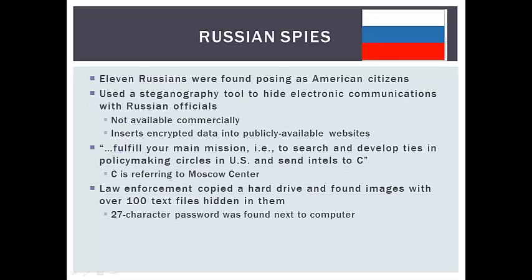Another example is a group of 11 Russian spies who were arrested and found to be impersonating Americans. They used a steganography tool to hide their electronic communications with Russian officials. The tool they used is not commercially available. It works by inserting encrypted data into publicly available websites so that Russian officials can then access the website and the information being communicated. Investigators found information sent from Russian officials to the spies detailing their mission — to search and develop ties in policy-making circles in the United States and send intelligence to C, referring to the Moscow Center.